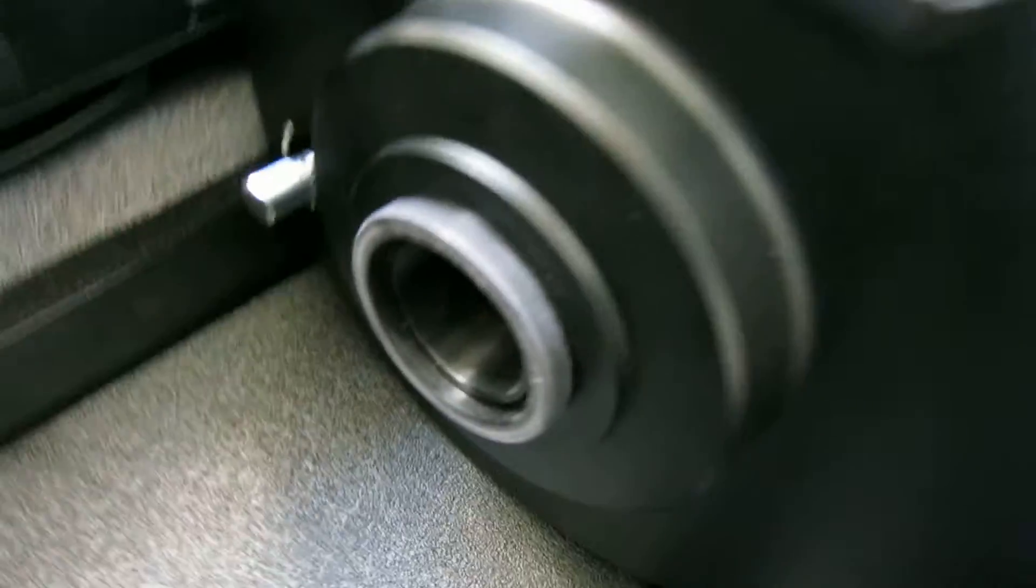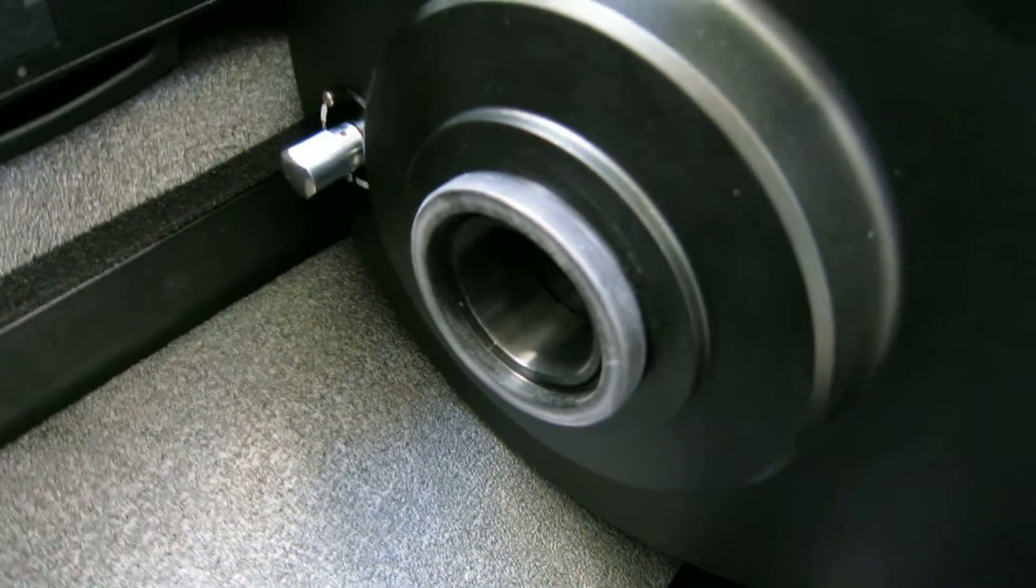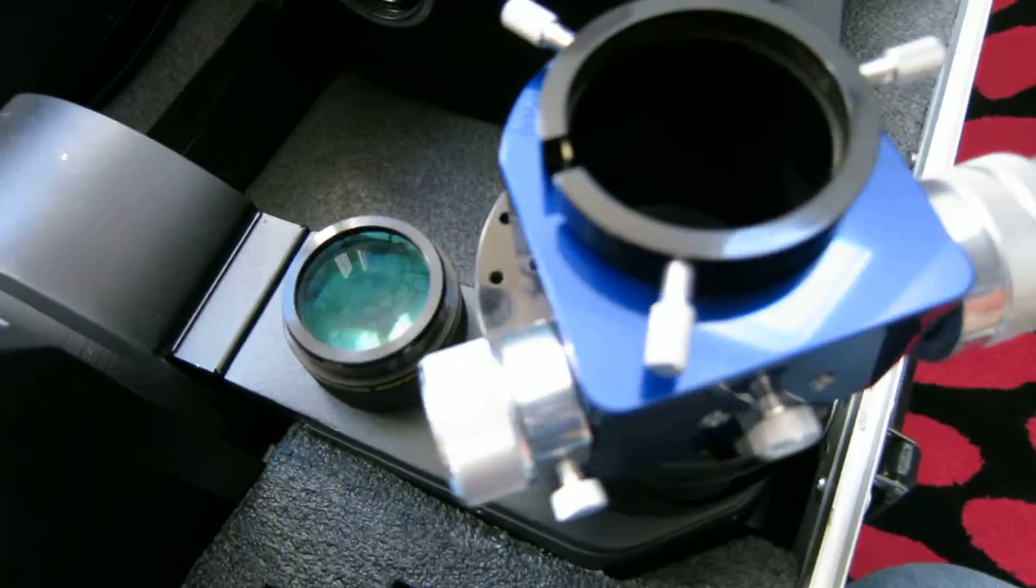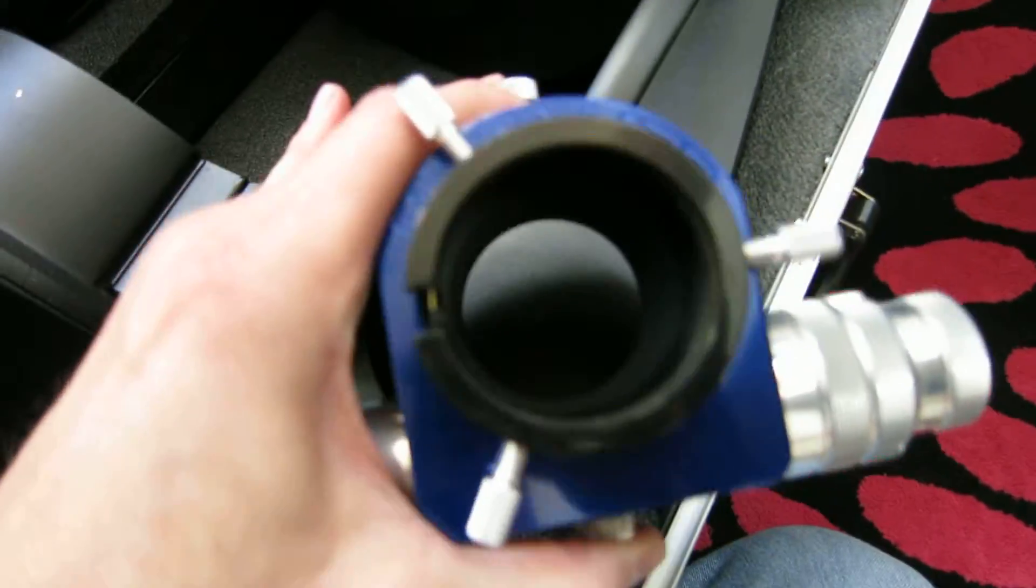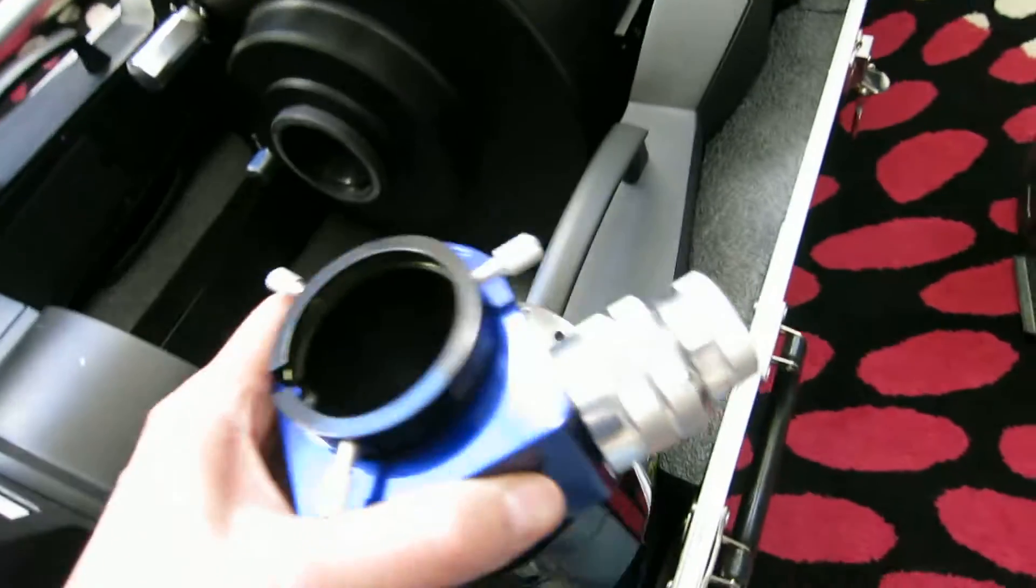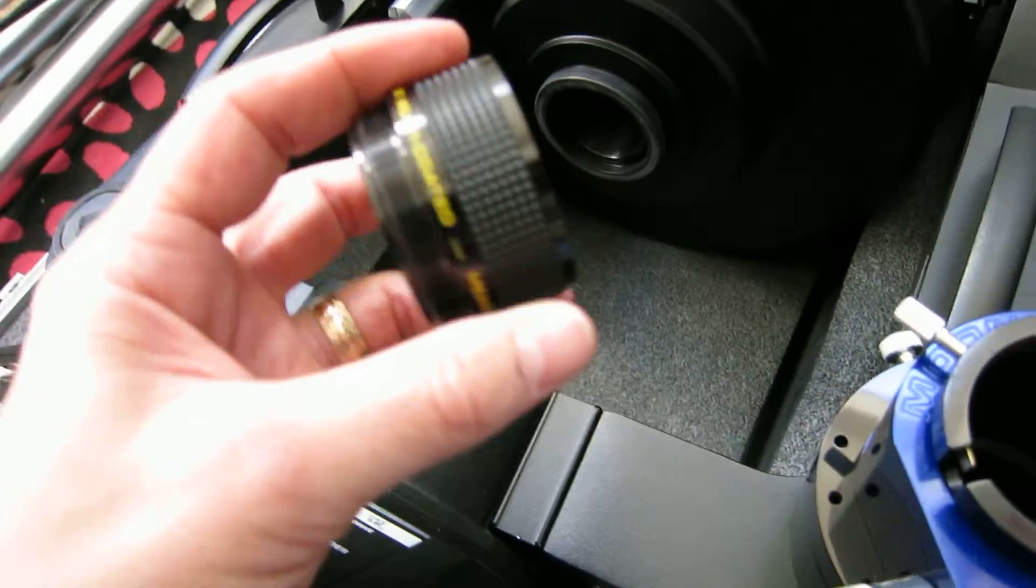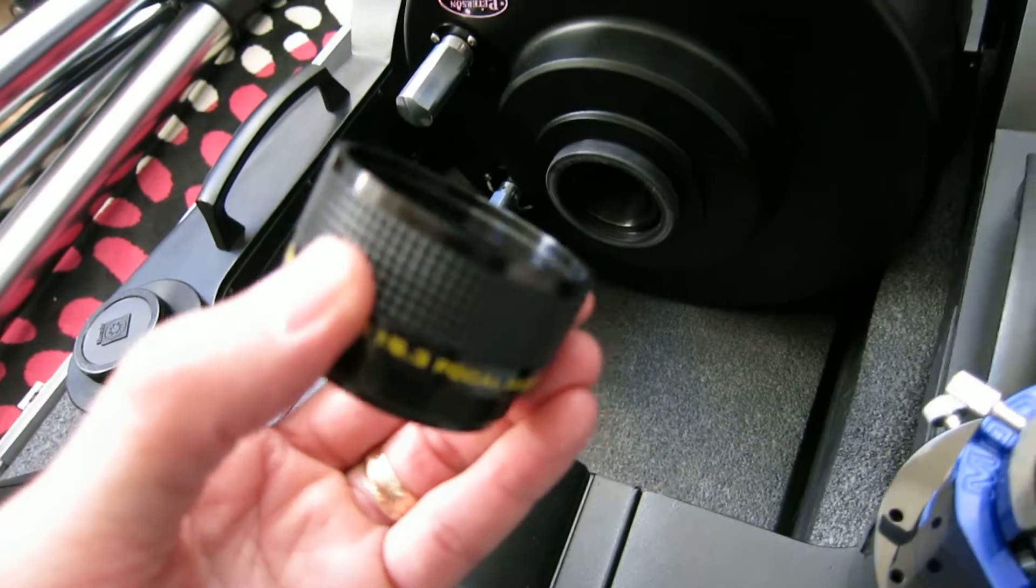I've already removed the cover, exposing the threads where the focuser would screw onto. And sitting here on the arm is my Moonlight Crayford focuser and the Meade 12-inch F6.3 focal reducer.